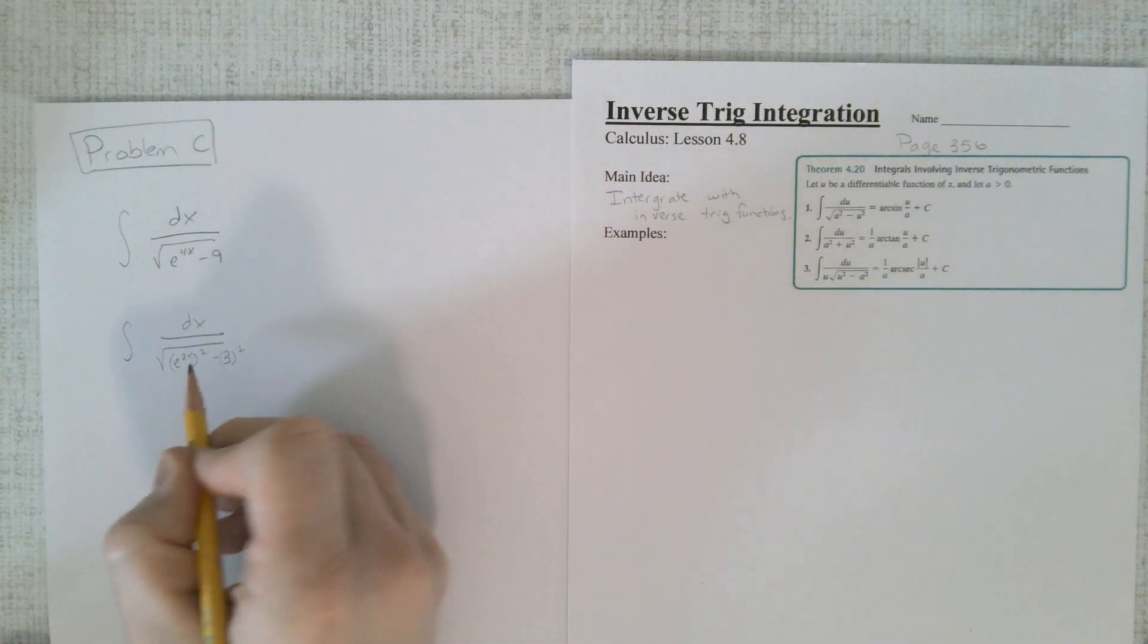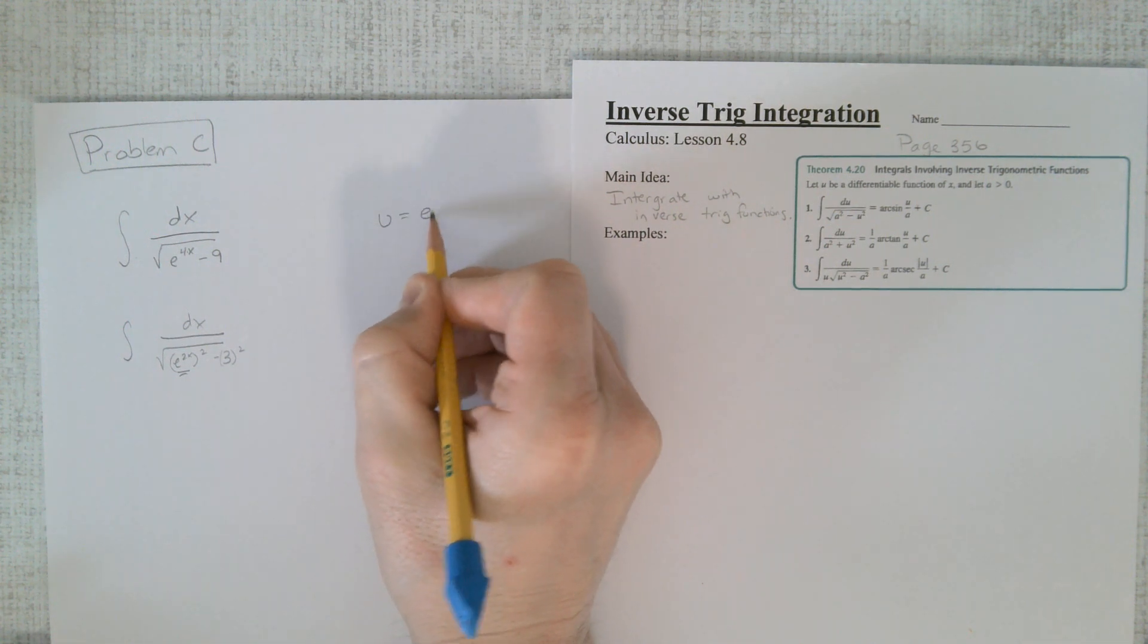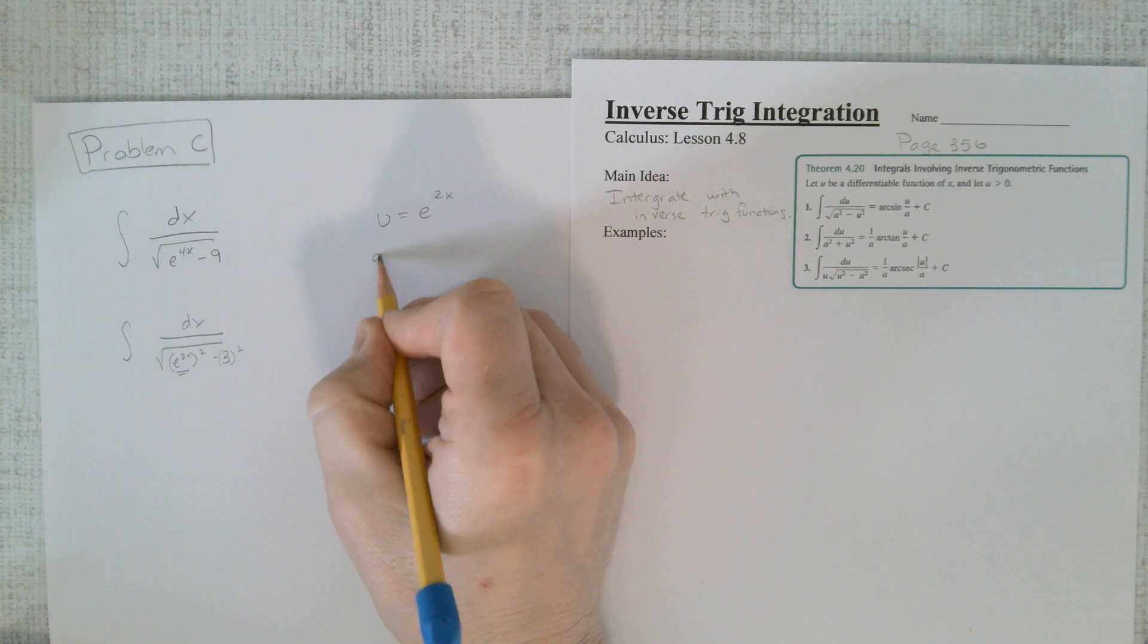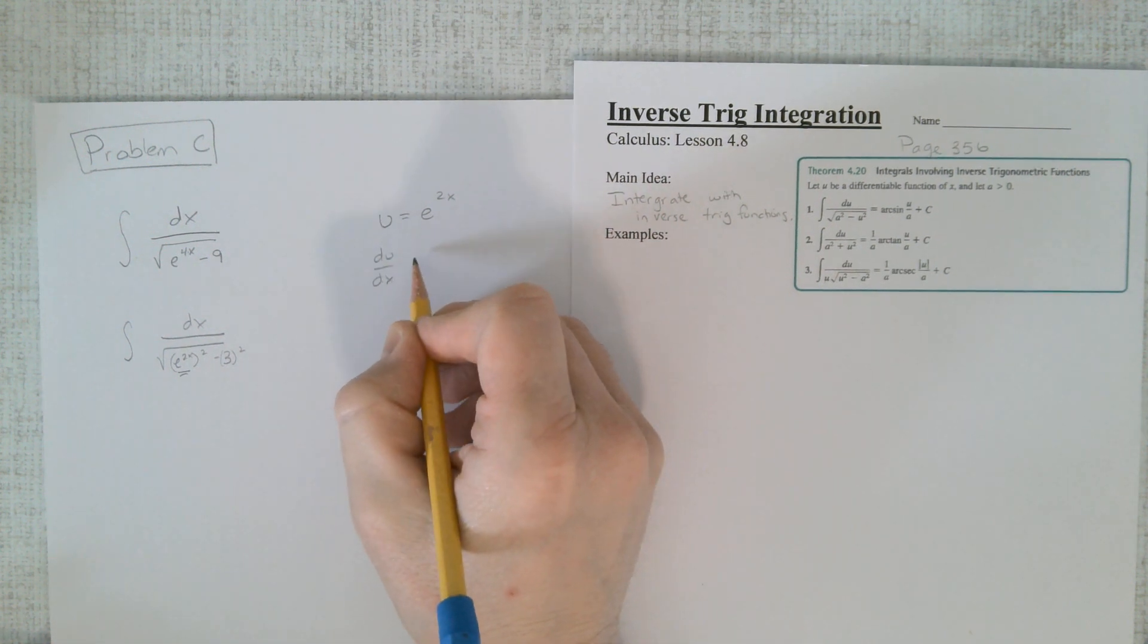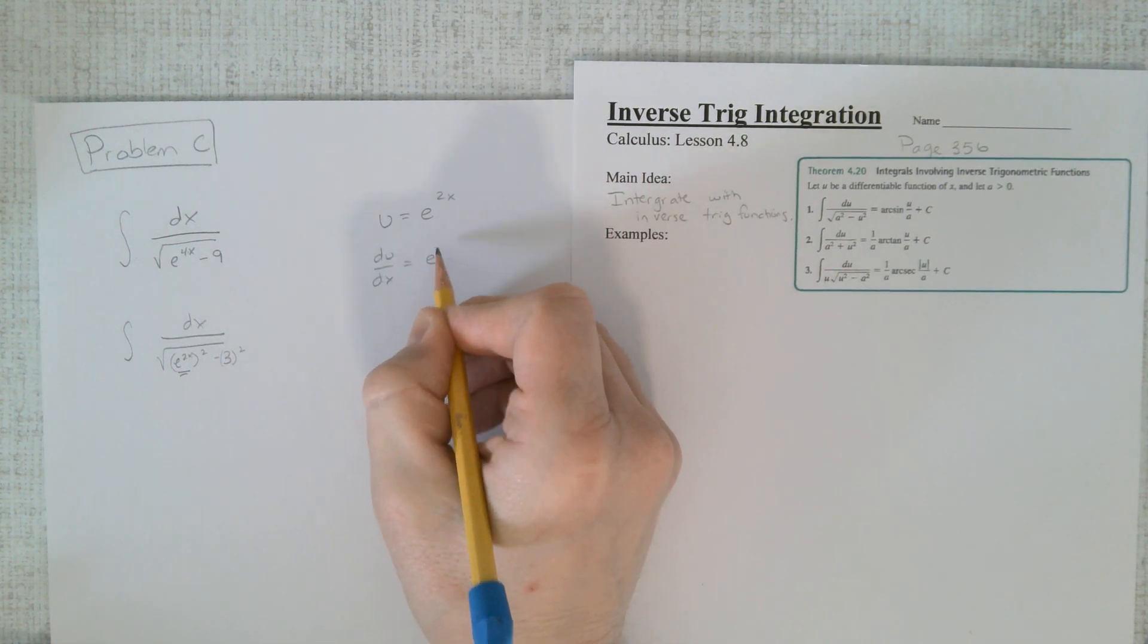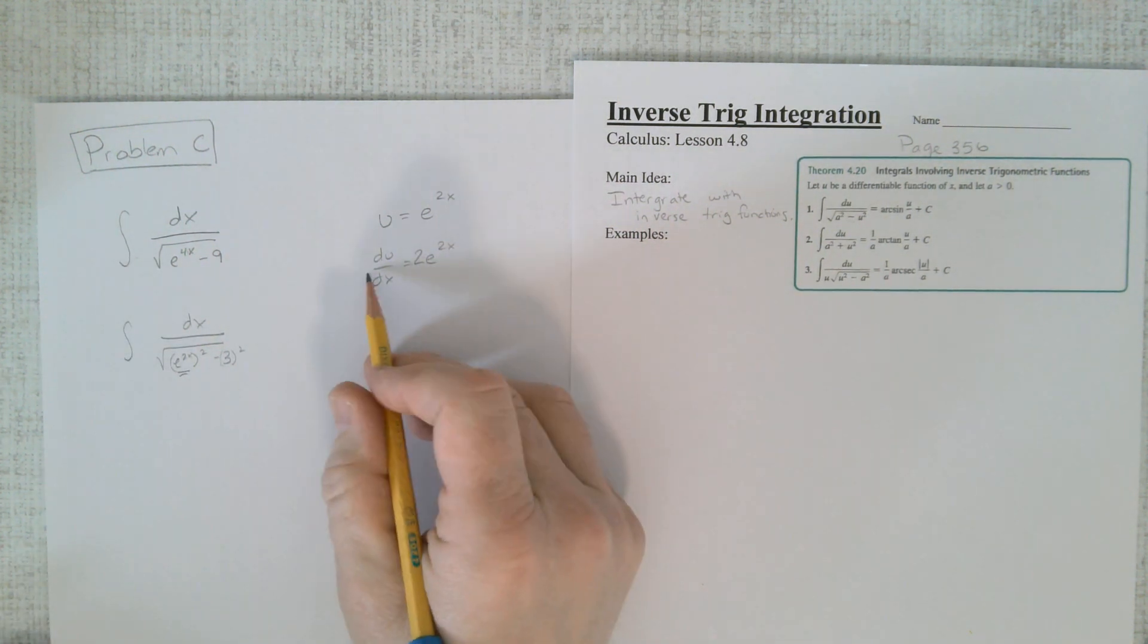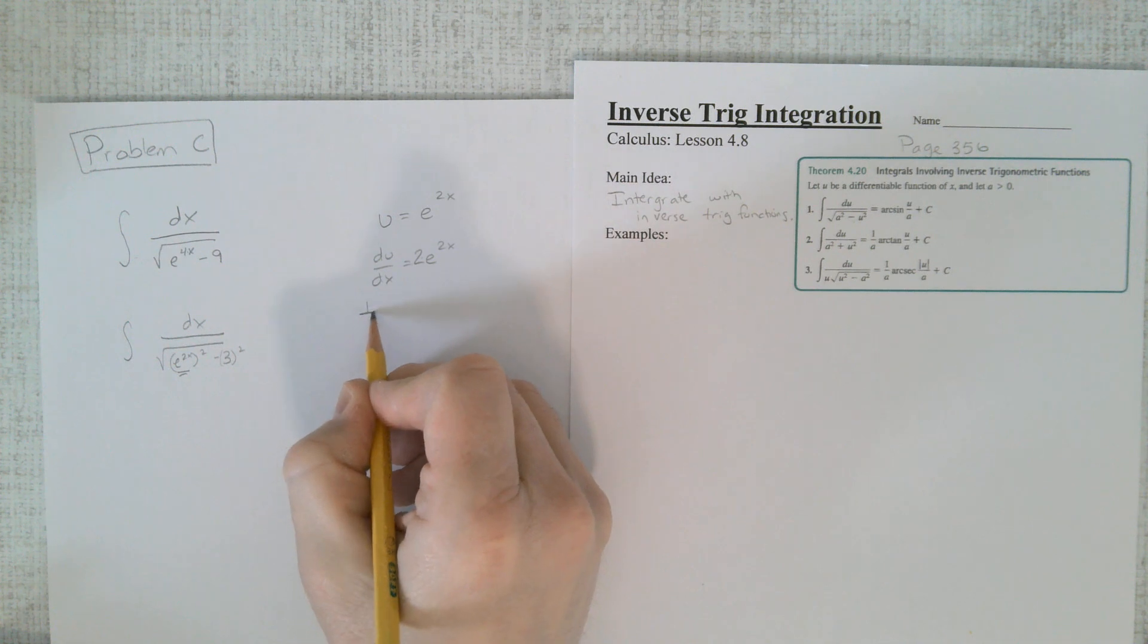Now, over here, again, I've always said let that be our u value. Well, where does that get us? Let's see here. du dx is e to the 2x. Don't forget to chain rule. Alright, let's go ahead and divide this over. That's 1 half.